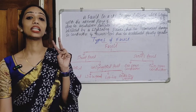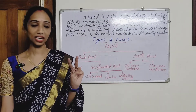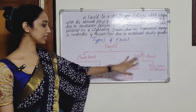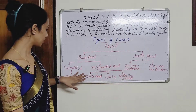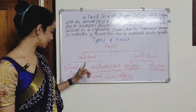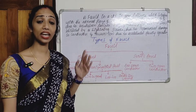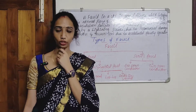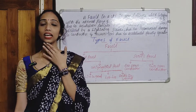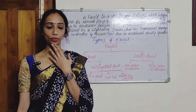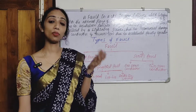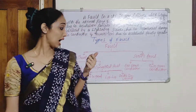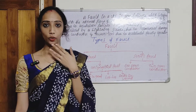The fault is classified into two types. The first type is called Shunt Fault, which is also called Symmetrical Fault. The second type is called Series Fault, which is also called Unsymmetrical Fault.